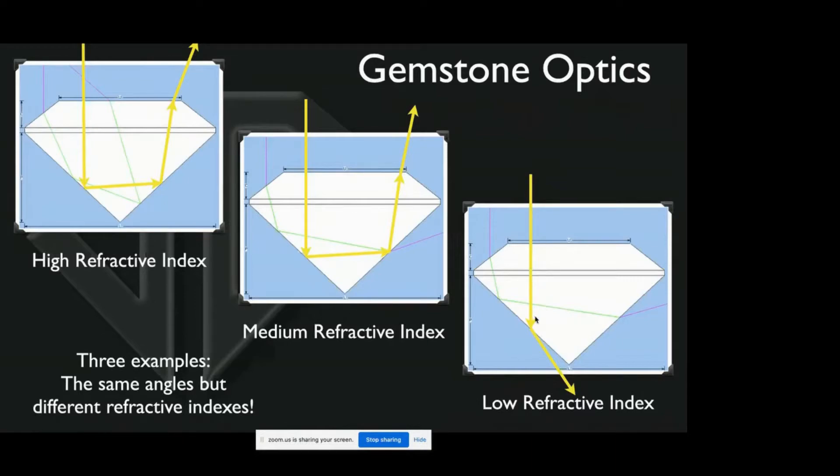That's what happens when your angles are not deep enough to reflect for the low refractive index. Now when things go through a facet, when the light goes through a facet that is angled, things change. The light is refracted or bent, so it goes here, bounces off here, bounces up there and out.